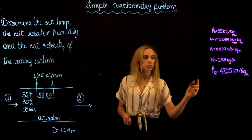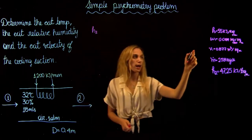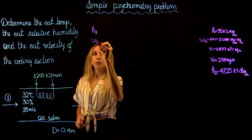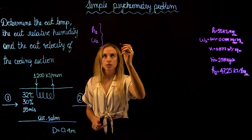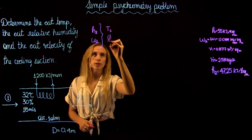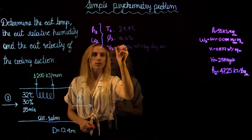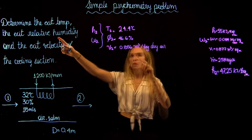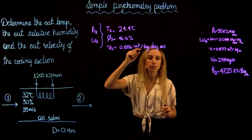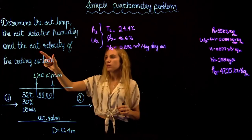Now we have two known values at state 2: the enthalpy and the absolute humidity, which remains constant. Using these two values on the psychrometric chart, we can find the exit temperature (dry bulb temperature at state 2), the relative humidity at state 2 which is 46.6%, and the specific volume at state 2.